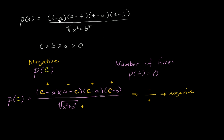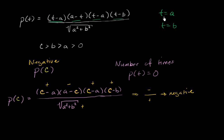Let's think about the number of times p of t equals 0. p of t equals 0 whenever the numerator equals 0. The numerator is the product of four expressions, so it equals 0 if any one of them is 0. The first three expressions equal 0 when t equals a, and the last expression equals 0 when t equals b. So there are two values of t — t equals a or t equals b — meaning p of t equals 0 exactly two times.